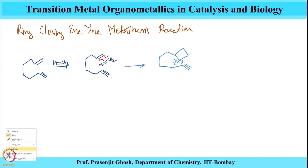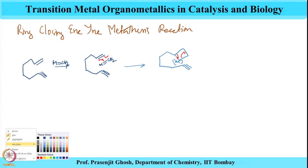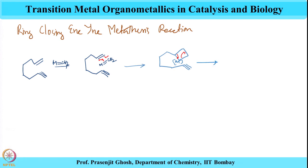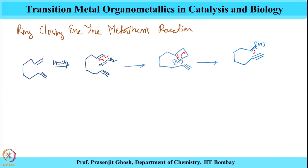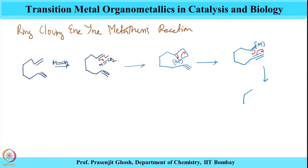That intermediate would also undergo rearrangement as shown here to give the active species. That would then react with the alkyne in the fashion shown, to give this intermediate — the alkyne reacting in the fashion shown over here.